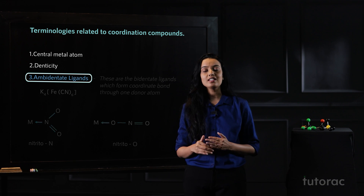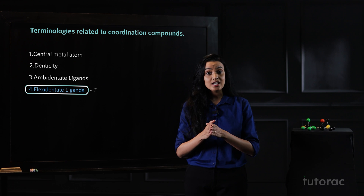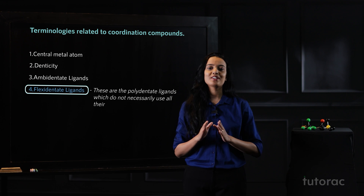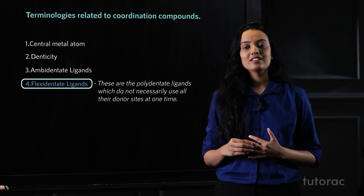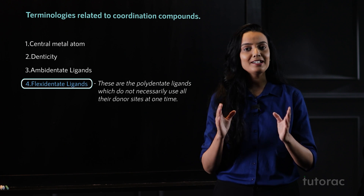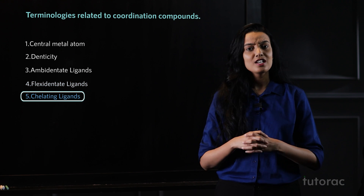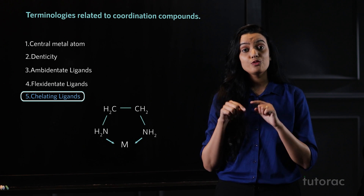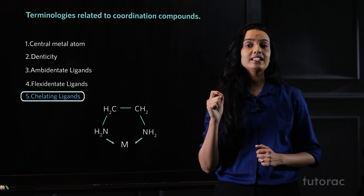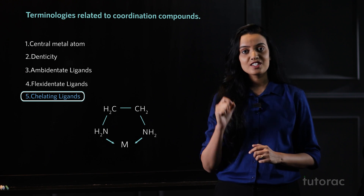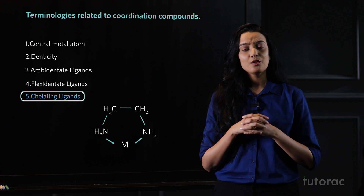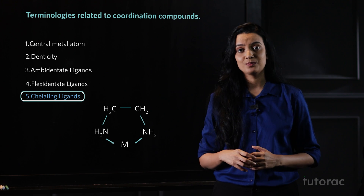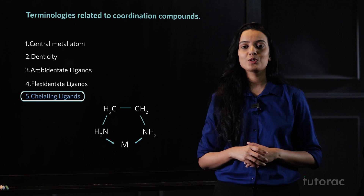The next category is flexidentate ligands. These are polydentate ligands that do not necessarily use all their donor sites at one time — whatever the requirement, they will form that many bonds. The last type is chelating ligands: when a polydentate ligand combines with a metal to form a ring-like structure, those ligands are known as chelating ligands, and this effect is known as chelation. A five- or six-membered ring formed this way is much more stable.